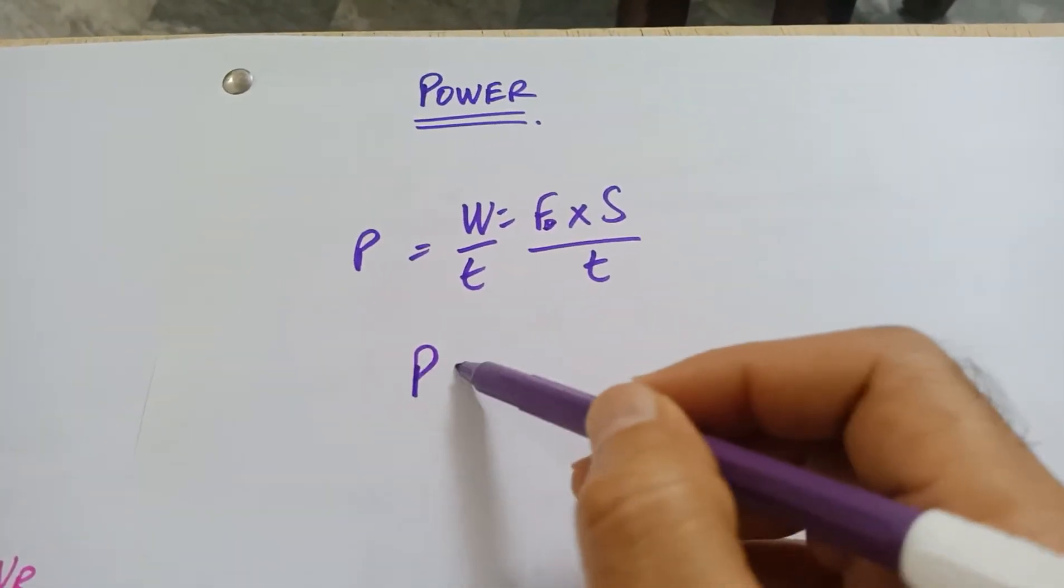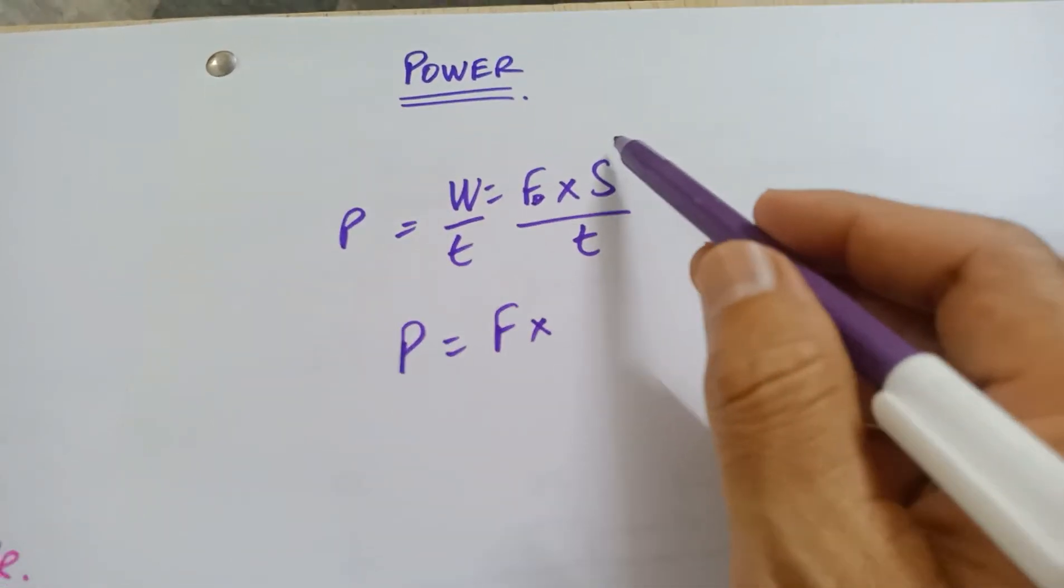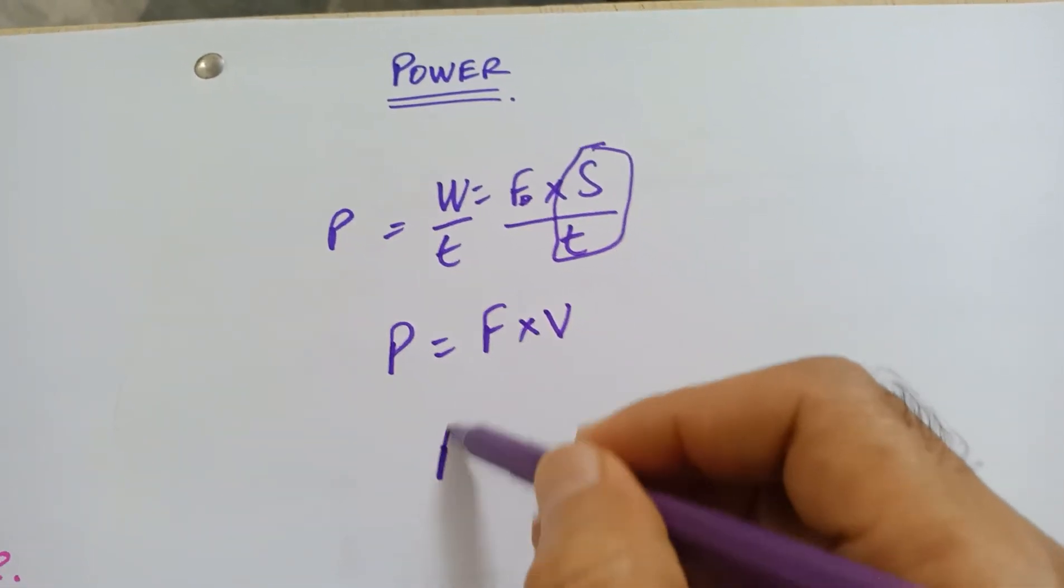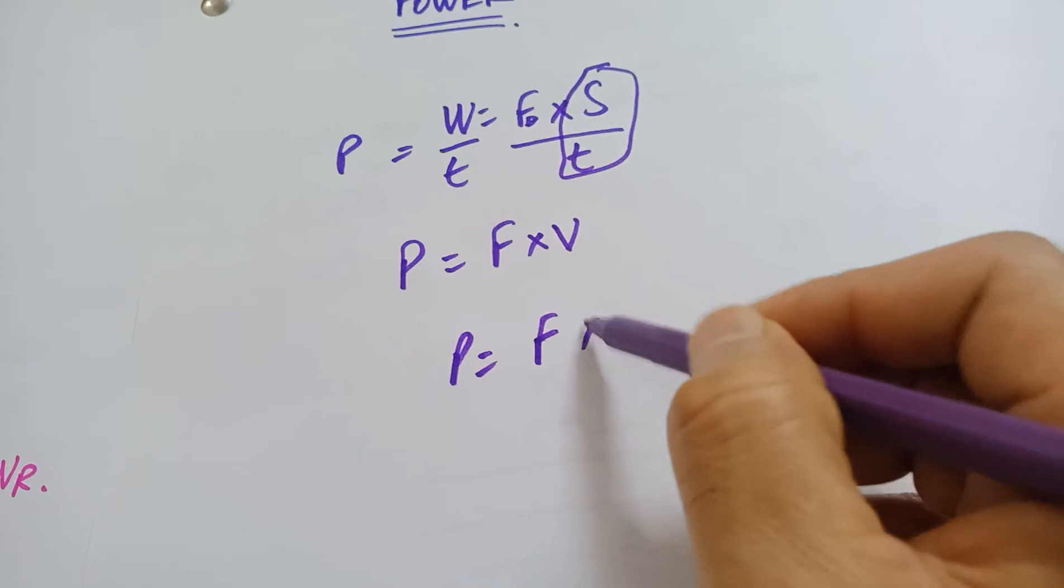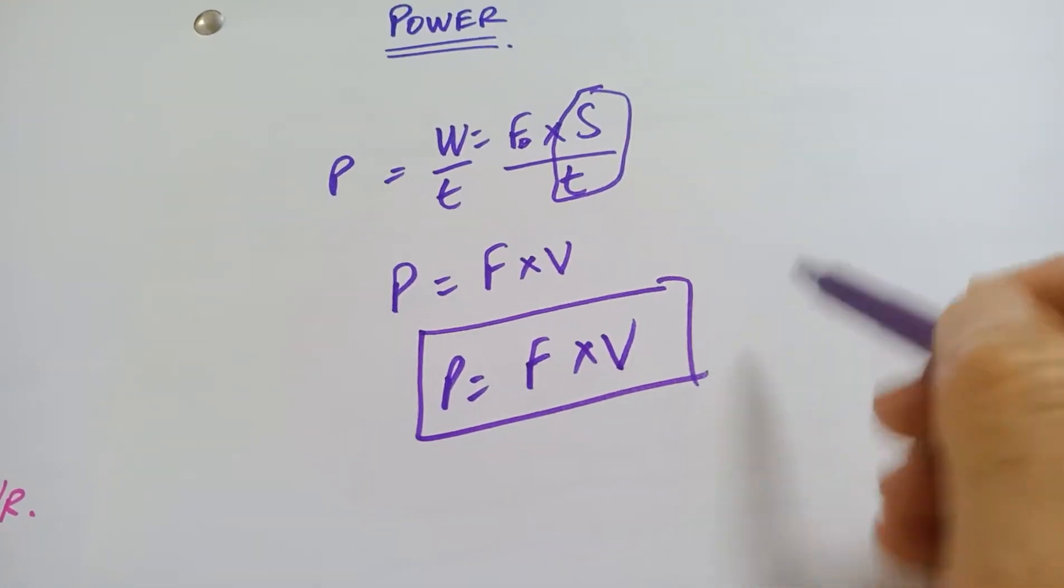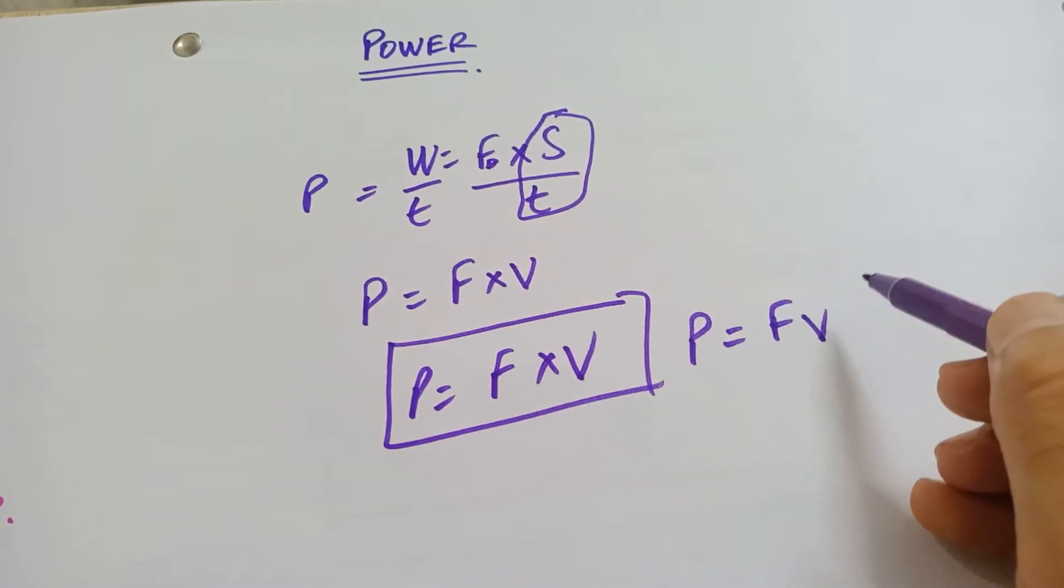Power is now going to be F into V because distance over time is V. So the formula for the power is F into V, or you can write it down as power equals F into V.